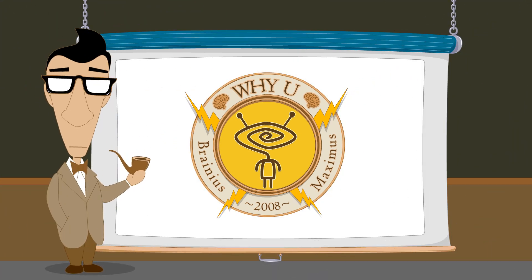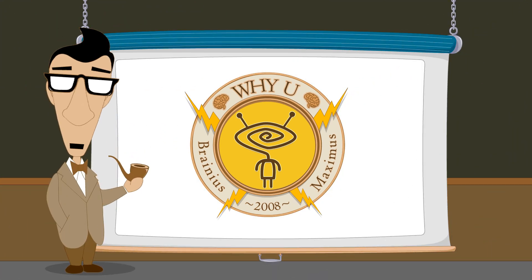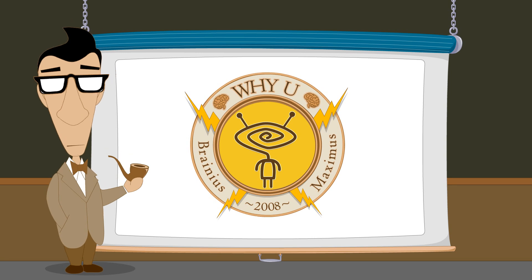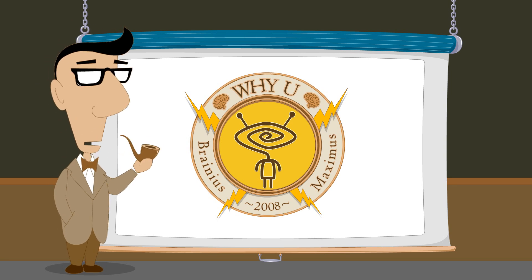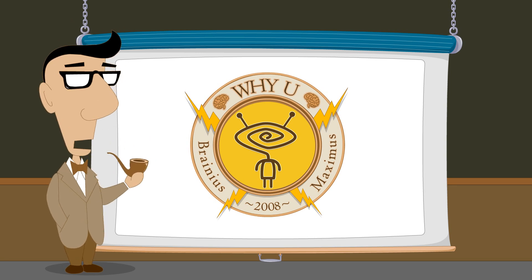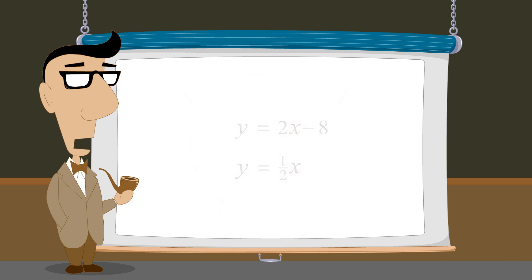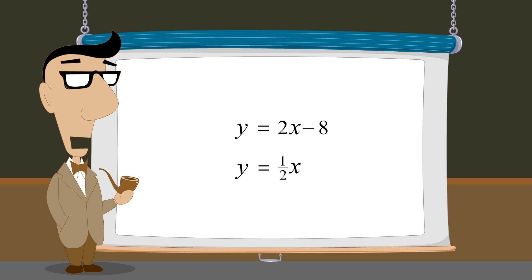Hello, I'm Professor Von Schmohawk and welcome to Why U. In the last lecture, we saw how systems of two linear equations in two variables could be solved to find one solution which simultaneously satisfies both equations.